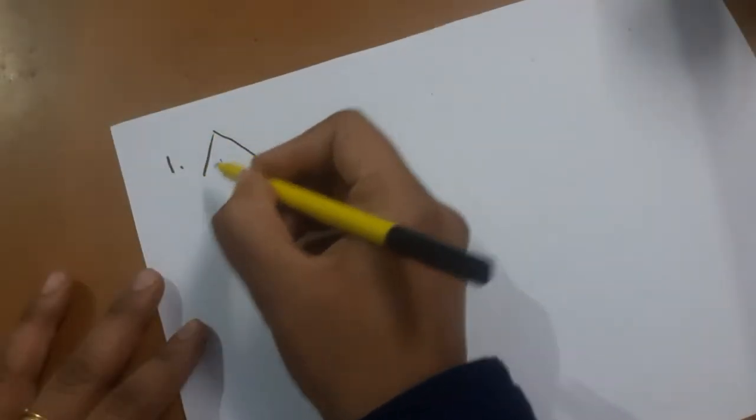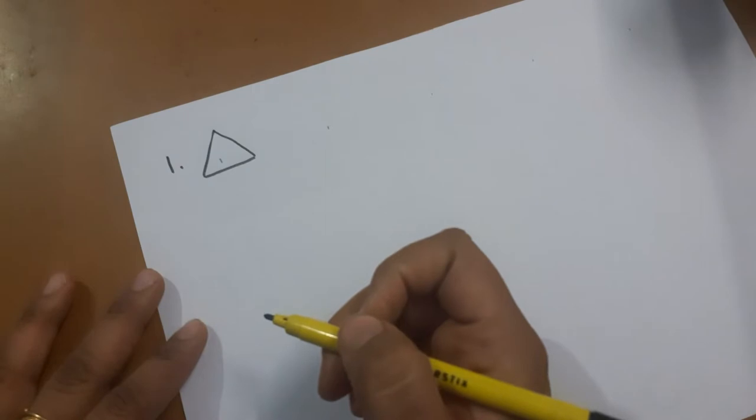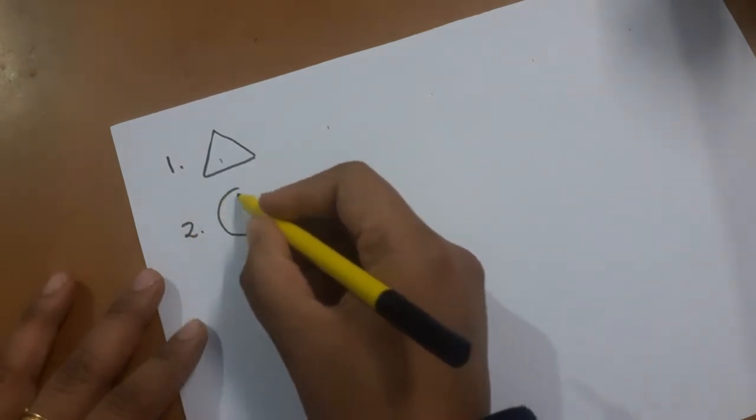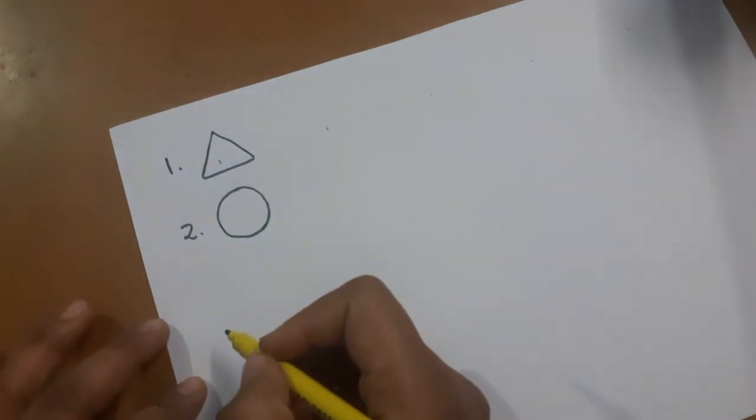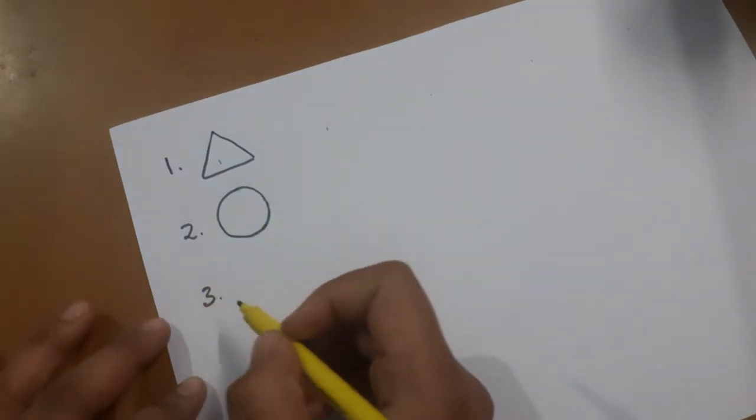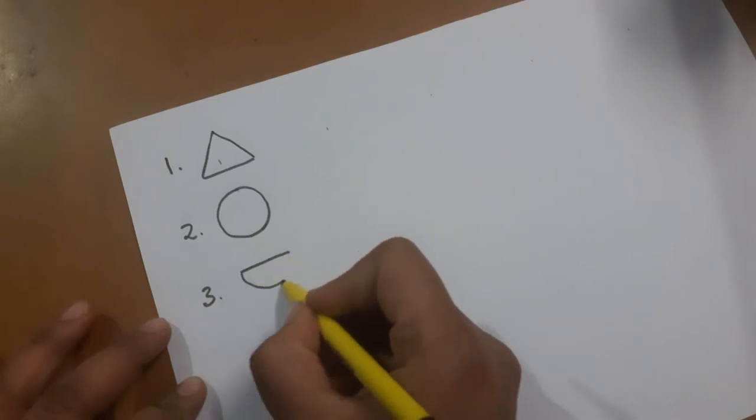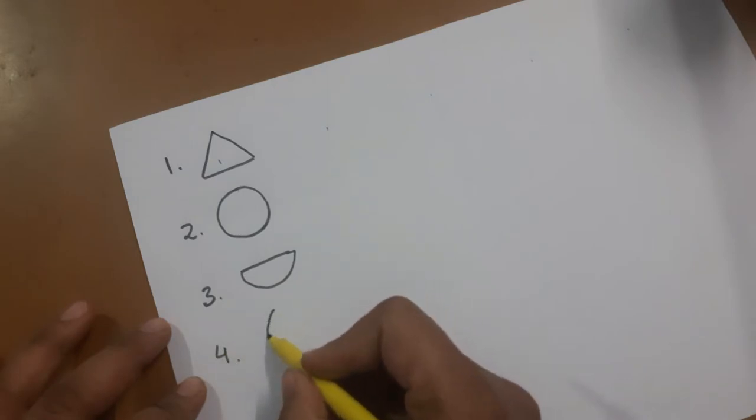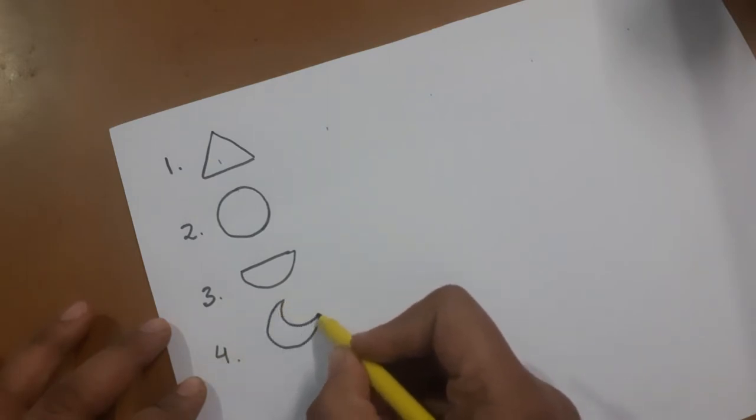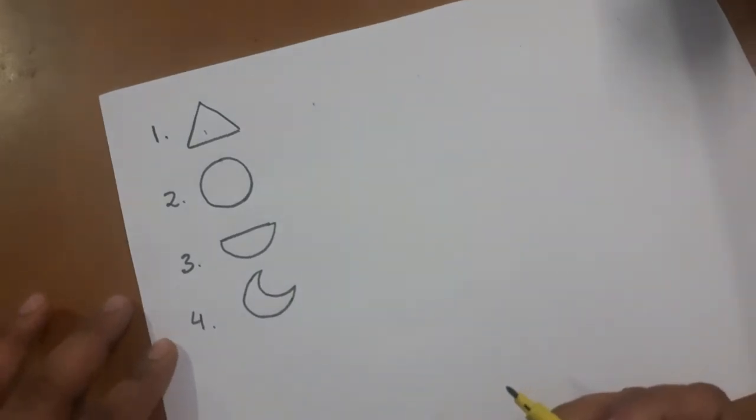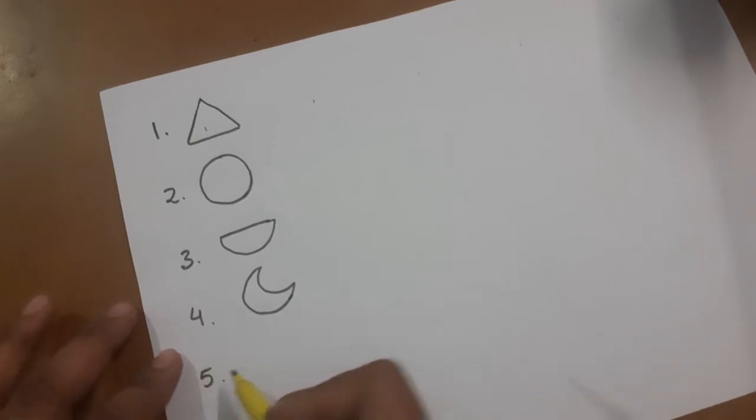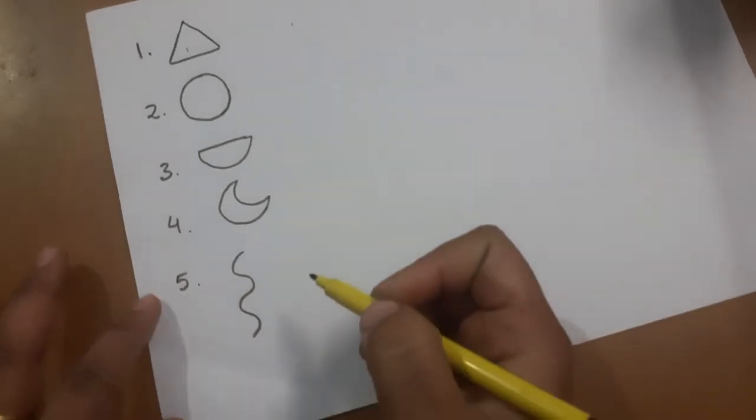The first basic shape that we're using is a triangle. Second is a circle. Third shape that we will use is a semicircle. Fourth shape is a crescent, like a moon. Fifth shape or line that we are making here is a curved line like this.